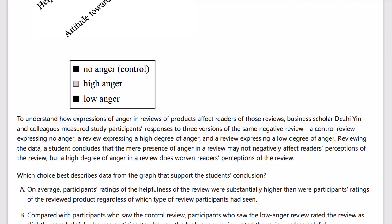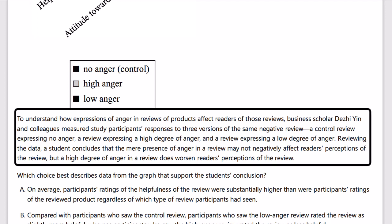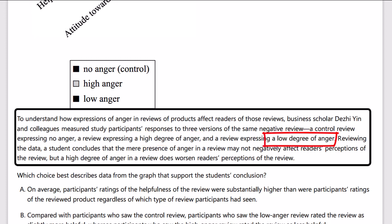So let's begin. To understand how expressions of anger in reviews of products affect readers of those reviews, business scholar Yin and colleagues measured study participants' responses to three versions of the same negative review: a control review expressing no anger, a review expressing a high degree of anger, and a review expressing a low degree of anger.